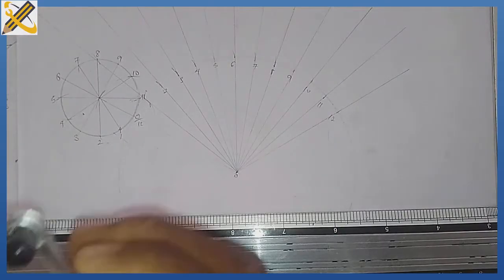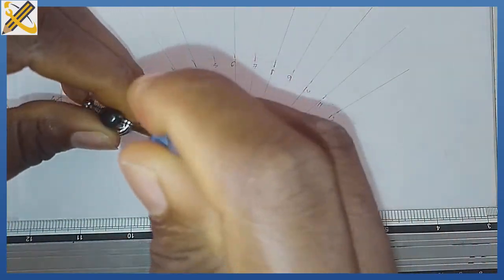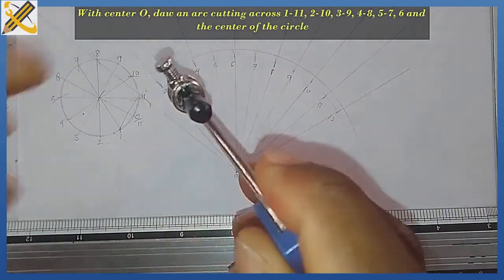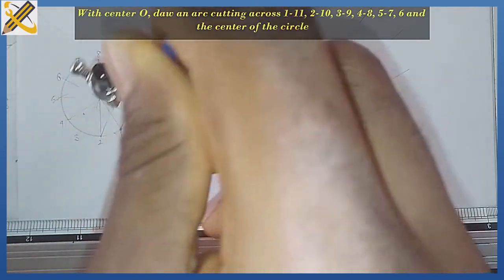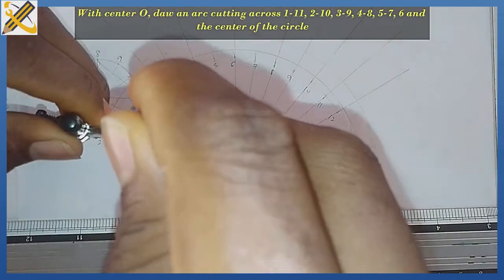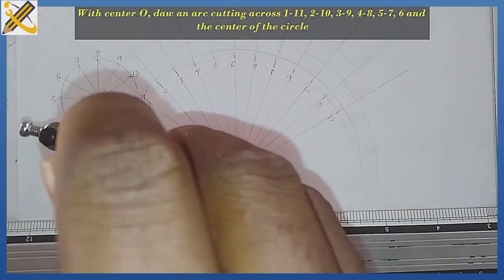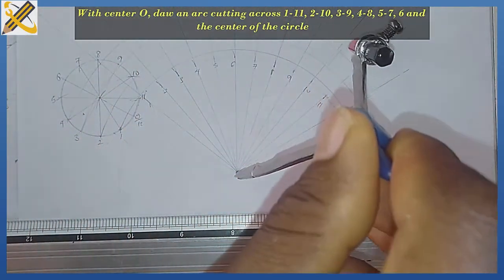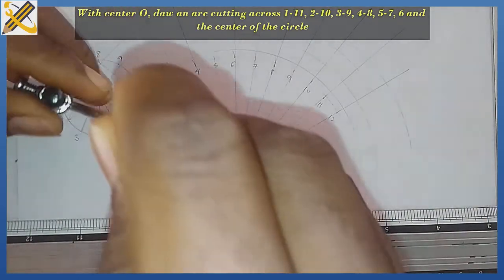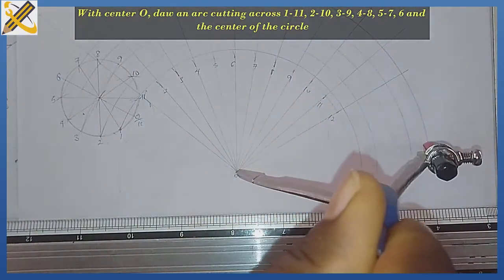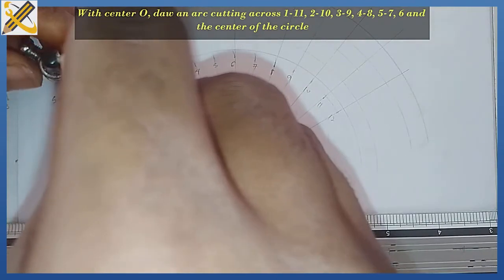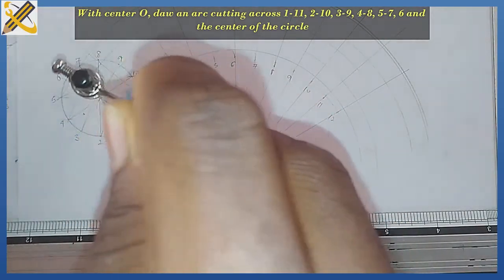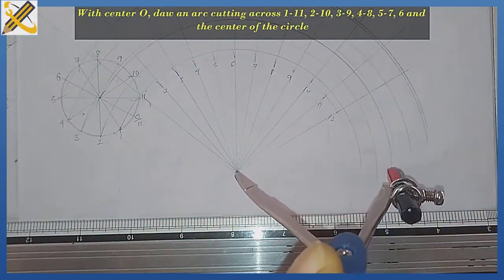Pick your compass, place it at point 0, and extend it to point 1. Note that points 1 and 11 lie on the same plane, then draw a semicircle cutting across. From point 0 extend to point 2 and draw. Continue extending to points 3, 4, 5, and 6, drawing an arc each time.